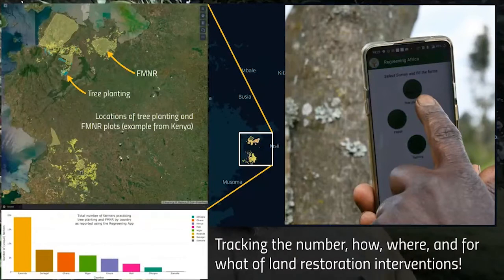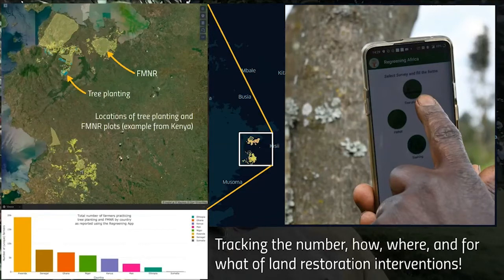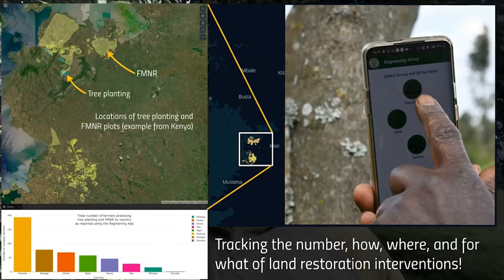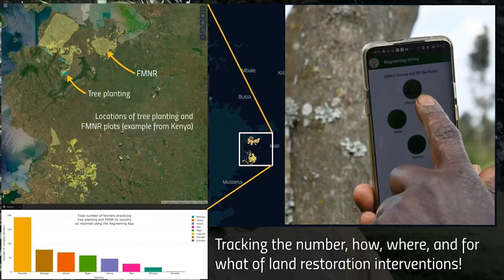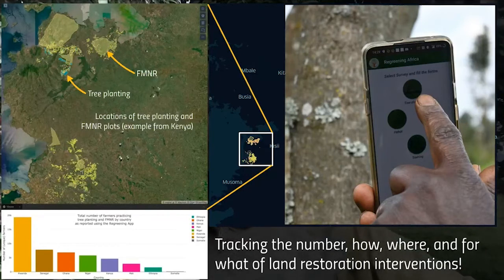Here's an example of data that's coming in using the app. You can see on the left a map with some polygons that show FMNR and tree planting — information submitted by implementing partners on the ground or by farmers themselves. In the Regreening Africa project, it's being used across eight countries where we have a large number of farmers registered and using this app to track what they're planting and where.